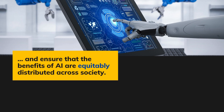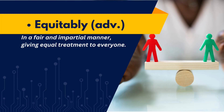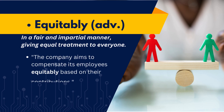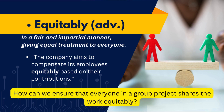And ensure that the benefits of AI are equitably distributed across society. When we talk about doing something equitably, we mean doing it in a fair and impartial manner, giving equal treatment to everyone. In a workplace, the goal might be to compensate employees equitably based on their contributions, ensuring fairness. How can we ensure that everyone in a group project shares the work equitably?